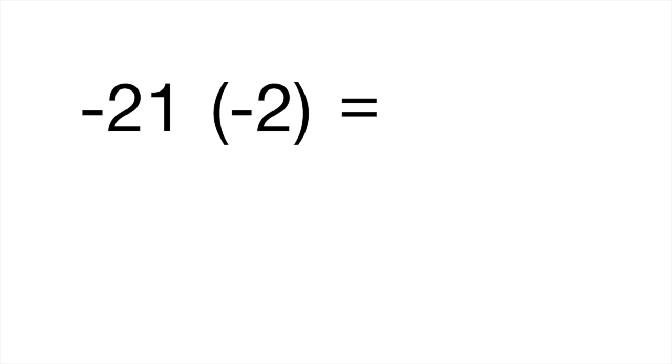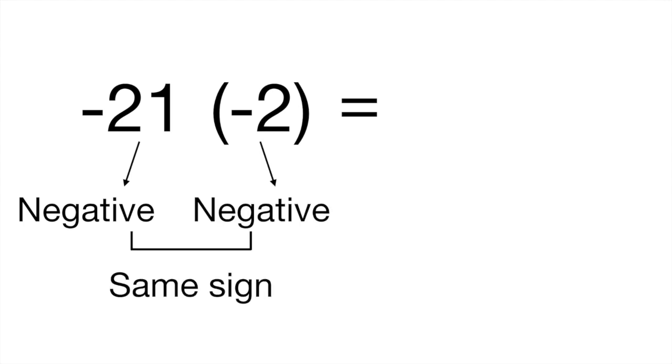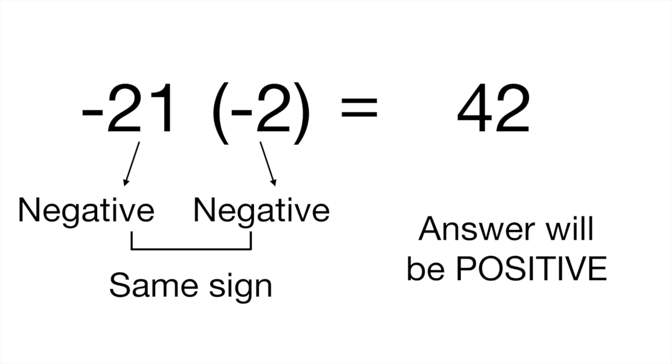Negative 21 times negative 2. So we have a negative and a negative. Same sign. Answer will be positive. Positive 42. Okay so you're getting the gist of this I hope.